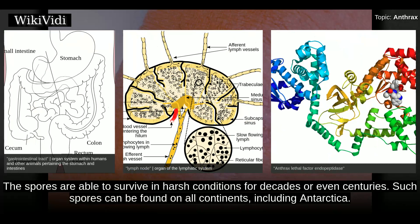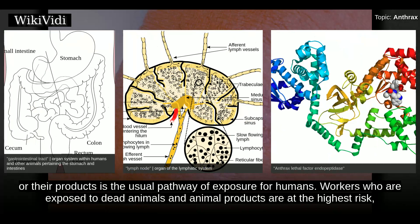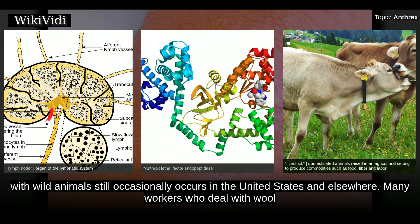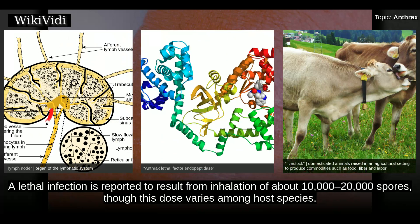The spores are able to survive in harsh conditions for decades or even centuries. Such spores can be found on all continents, including Antarctica. Disturbed grave sites of infected animals have been known to cause infection after 70 years. Occupational exposure to infected animals or their products is the usual pathway of exposure for humans. Workers who are exposed to dead animals and animal products are at the highest risk, especially in countries where anthrax is more common. Anthrax in livestock grazing on open range where they mix with wild animals still occasionally occurs in the United States and elsewhere. A lethal infection is reported to result from inhalation of about 10,000 to 20,000 spores, though this dose varies among host species.